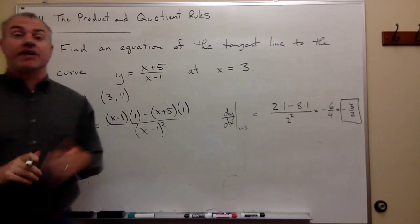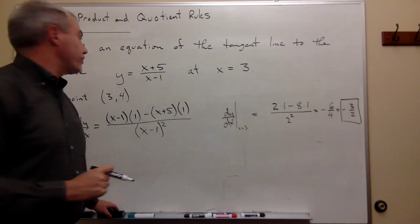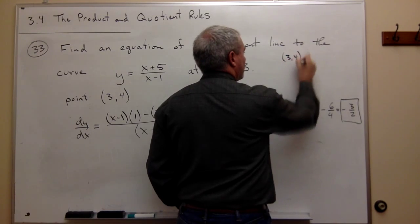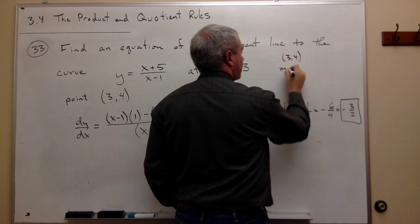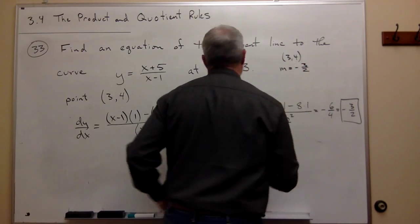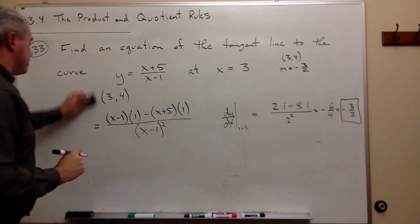Now I just need to find the actual equation. So let's write these things down. My point is 3, 4. My slope m is minus 3 over 2.